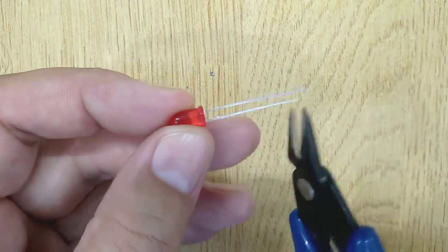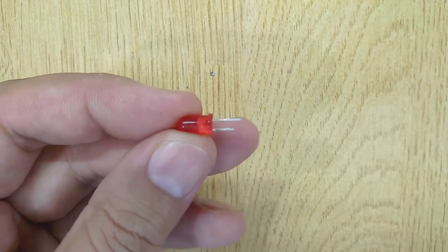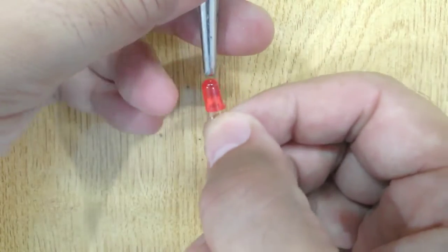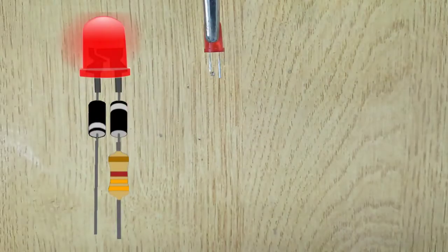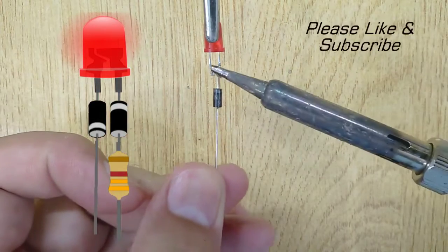Let's get started. First, solder the diode with the positive end of LED according to the diagram shown on the screen.